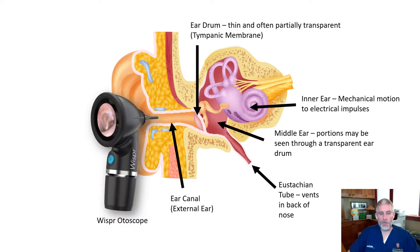The otoscope examination occurs when the otoscope is placed in the external ear canal to view the eardrum. And oftentimes, because of the transparency of the eardrum, you can actually see the structures behind it, as we'll point out in this presentation.